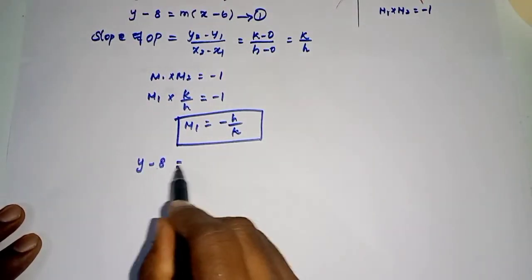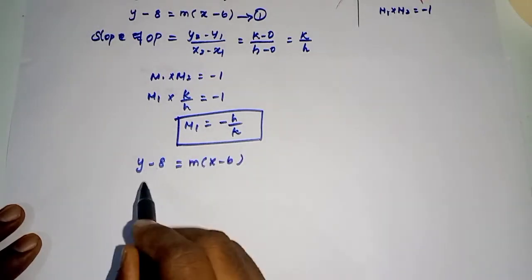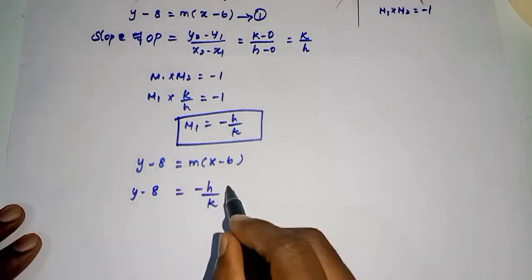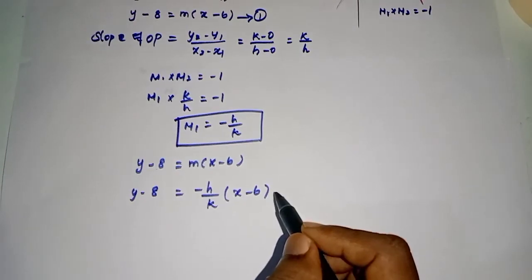So equation 1 is y - 8 = m(x - 6). Replace the slope m₂. So y - 8 = (-h/k)(x - 6).